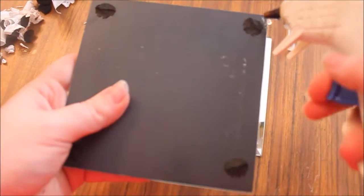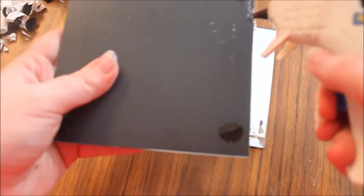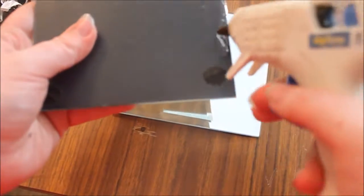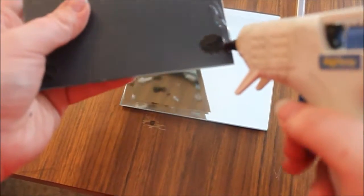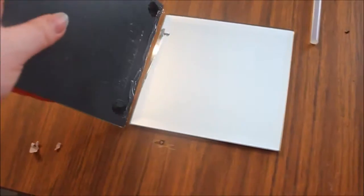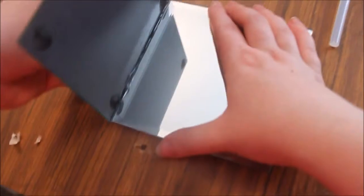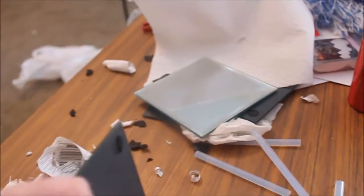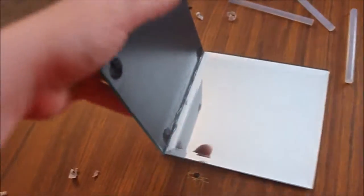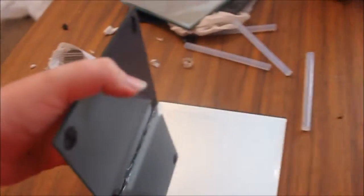What you're gonna do now is take one of the sides, take your hot glue and run it across the bottom, and then stick it on the side and just hold it there for a minute.